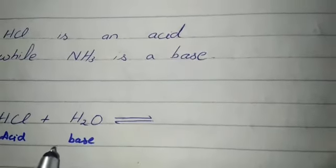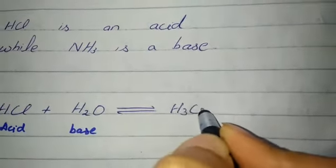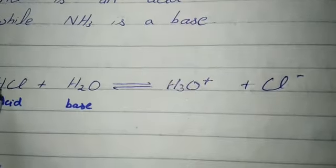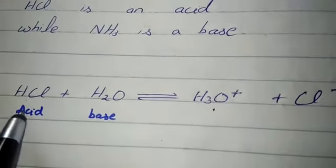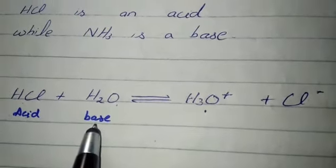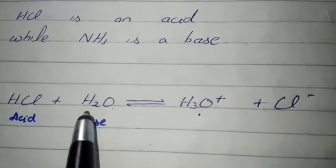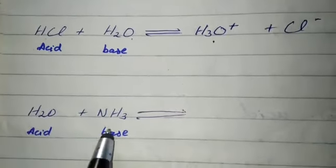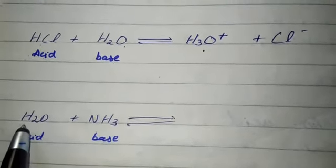Now let's discuss hydrochloric acid plus water: HCl + H2O. Hydrochloric acid donates its proton to water, forming H3O⁺ (hydronium ion, positive charge) plus Cl⁻ (negative charge). Because HCl has donated its proton, HCl is the acid. Water, in this equation, accepts the proton and so acts as a base.